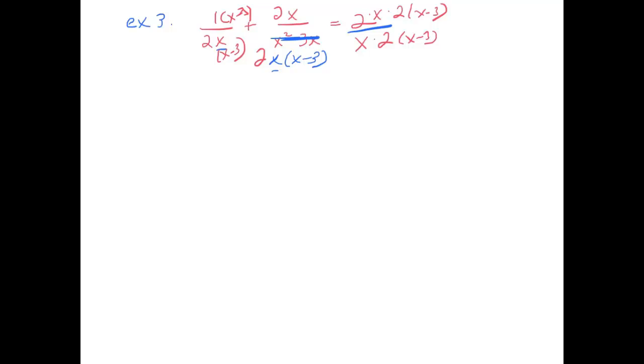So my first fraction became x minus 3 over 2x times x minus 3. My second is now 2x over 2x times x minus 3. And my third is now 4x times x minus 3 over 2x times x minus 3.